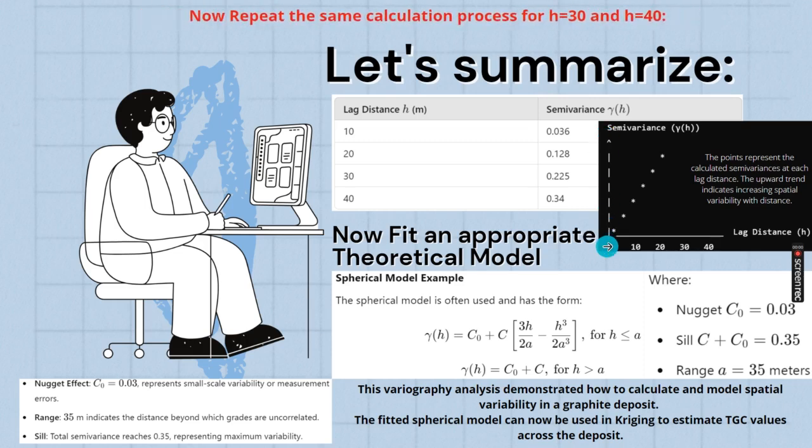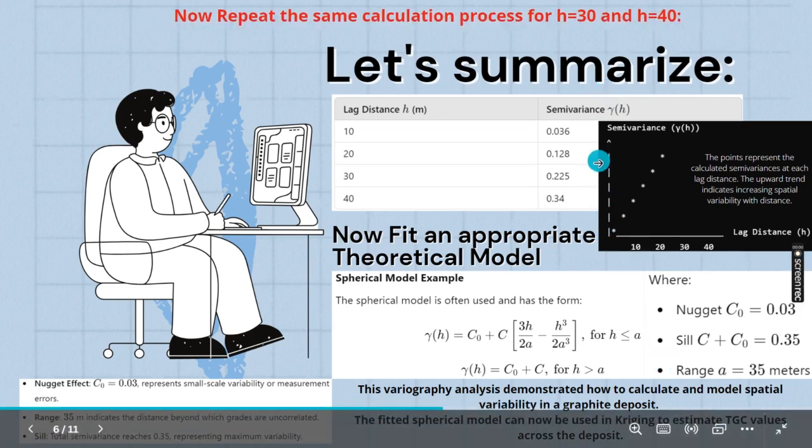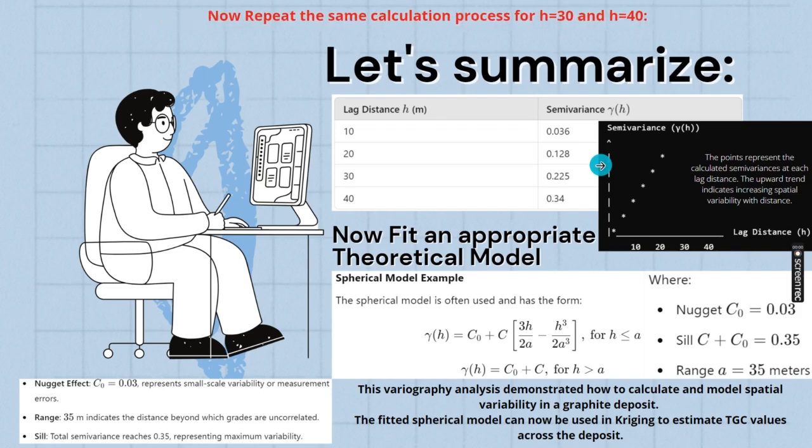This is x-axis, y-axis. In y-axis you keep plotting semi-variance, and in x-axis you keep on plotting that lag spacing. For 10, how much has it come? 0.036. This is 0.036. For 20 you keep value. For 30 you plot this. Likewise, best fit line prepare. You see, after a certain value of lag spacing, it will not be increasing variance. It will become straight. That part is called sill.